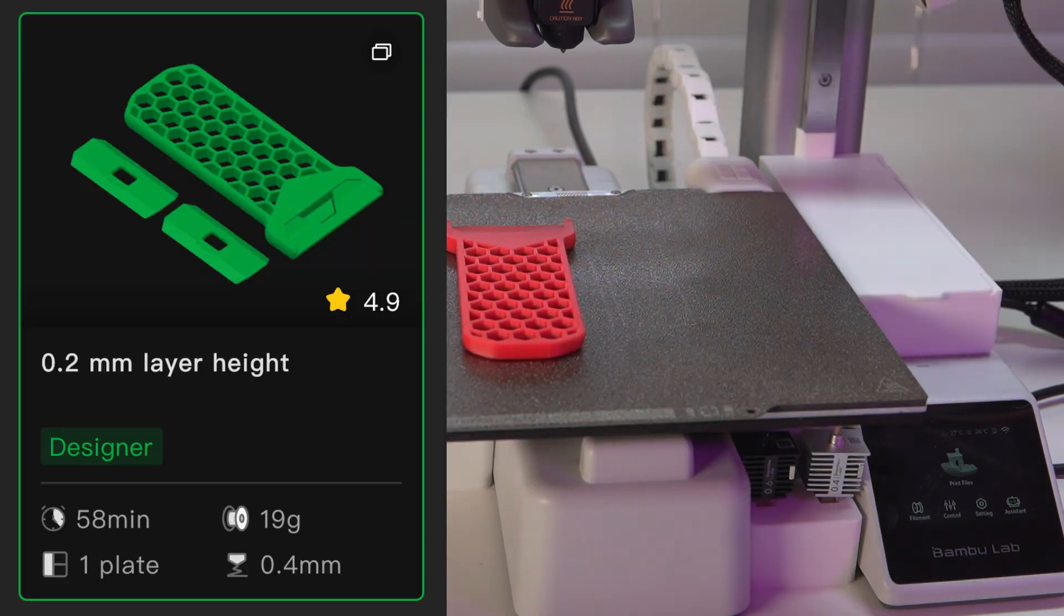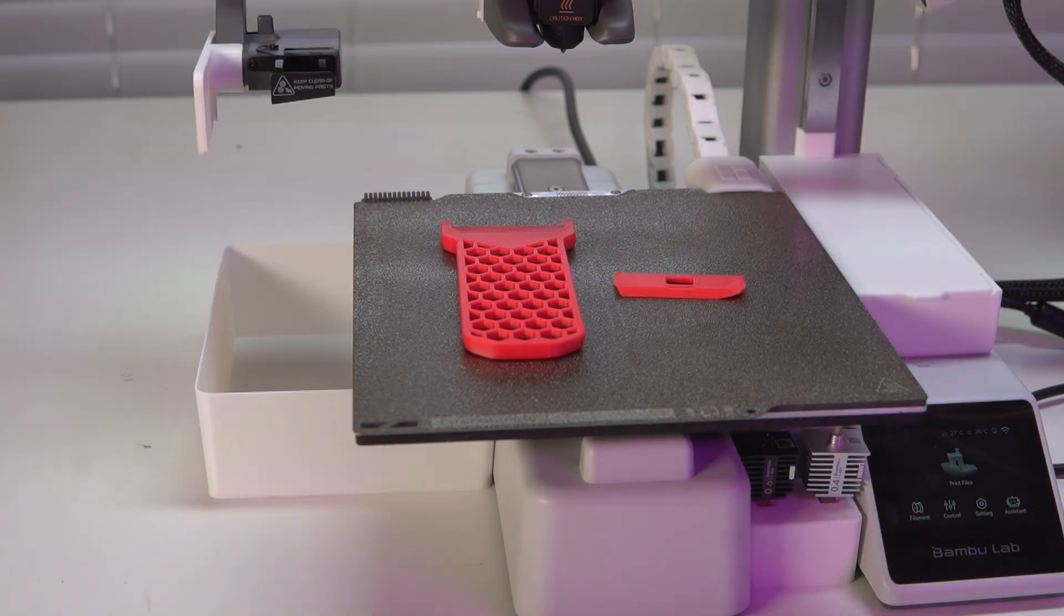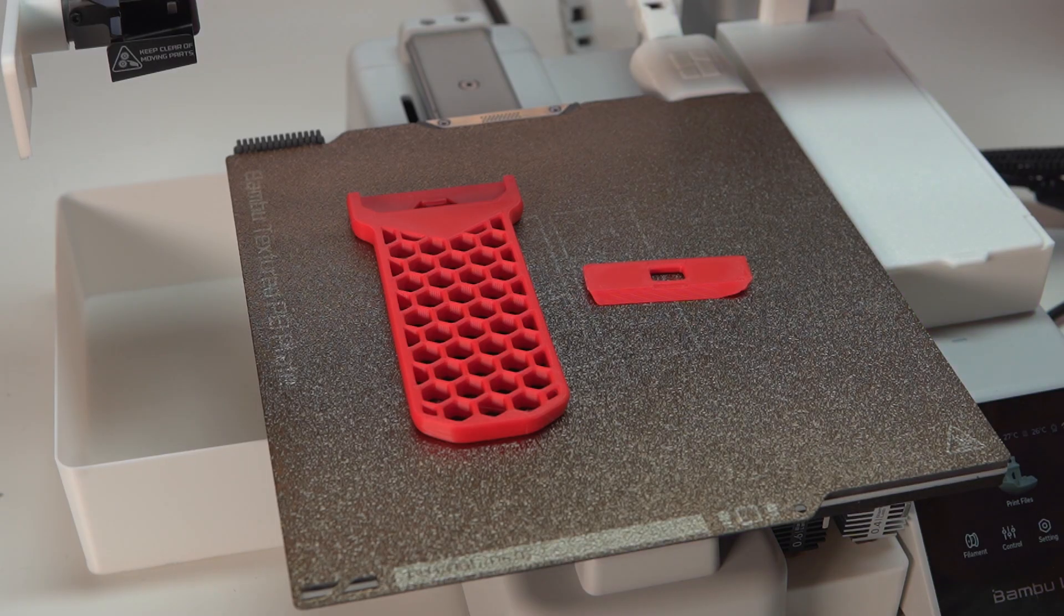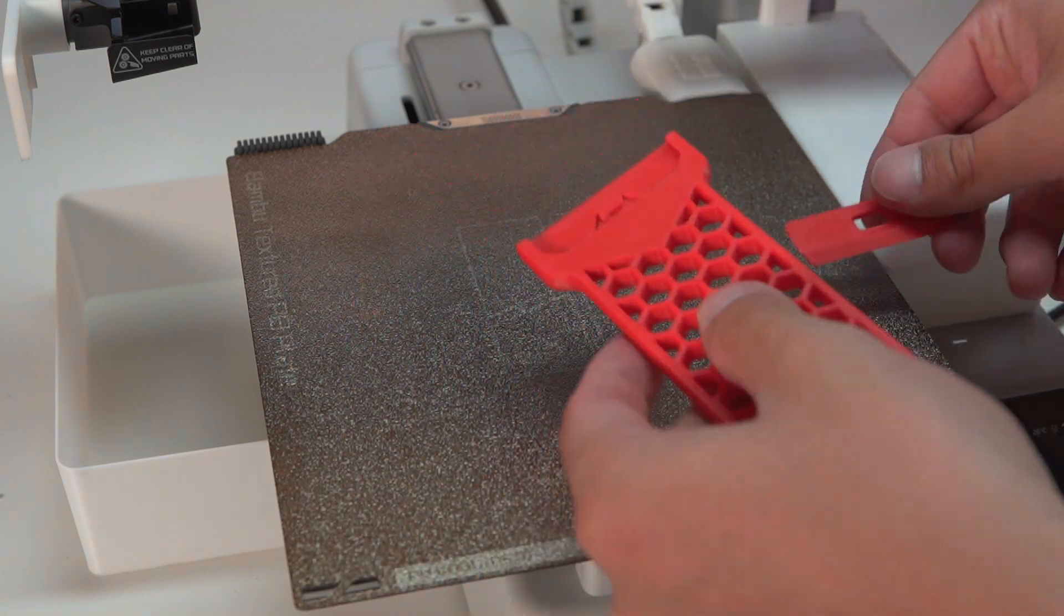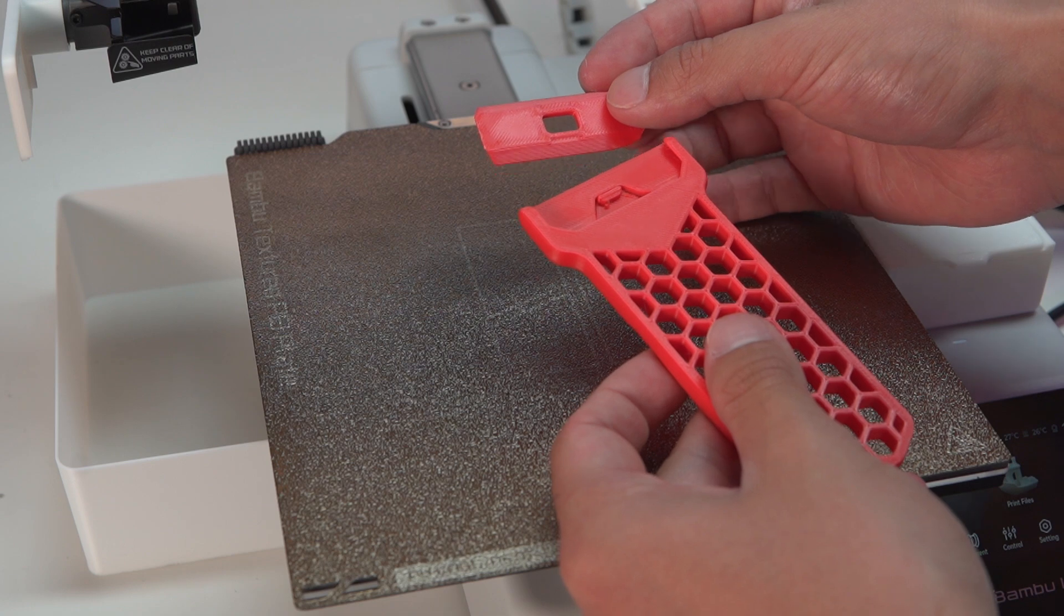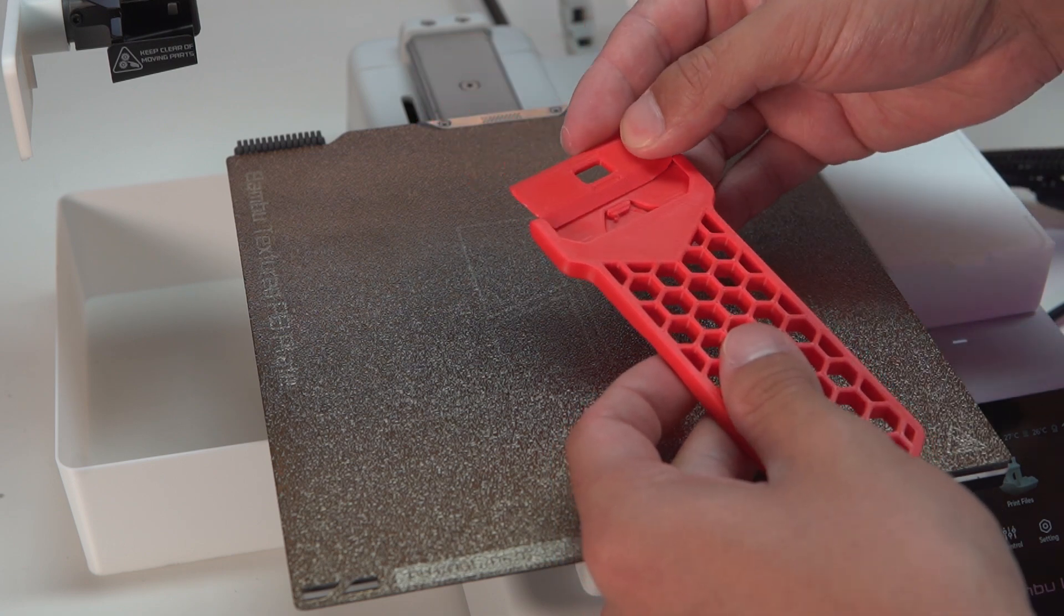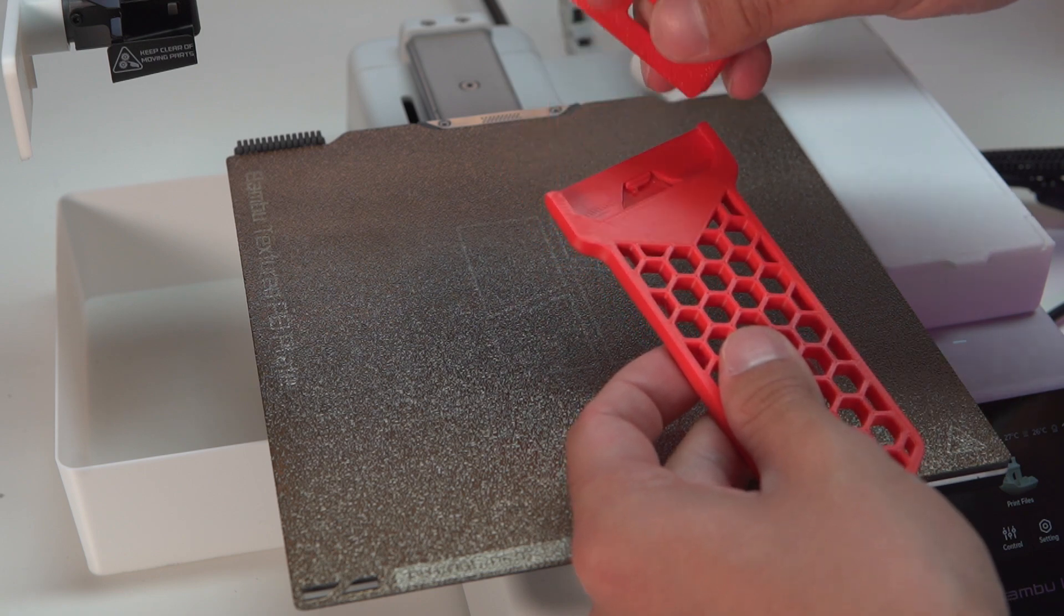And the last print here is going to take 58 minutes and 19 grams of filament, and I'm pretty sure you can already tell what this is. If you can't tell, this is a scraper right here to help you get some of your stuck on prints off of the build plate. What I like about this scraper compared to some others is that it uses a printed blade compared to a metal blade that you'd have to go buy. So this just slides right on in.